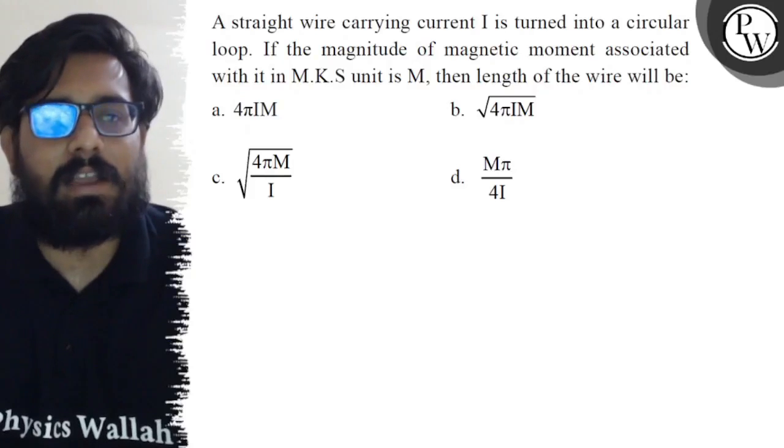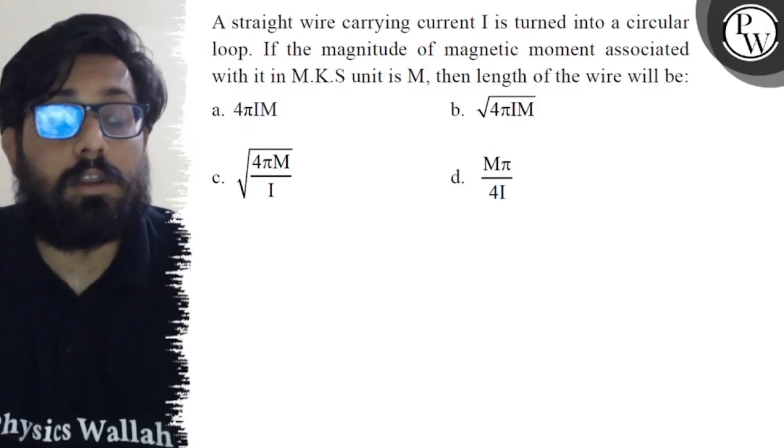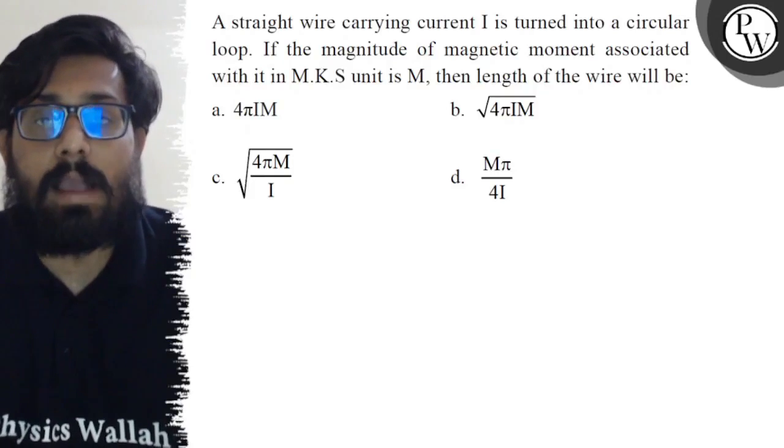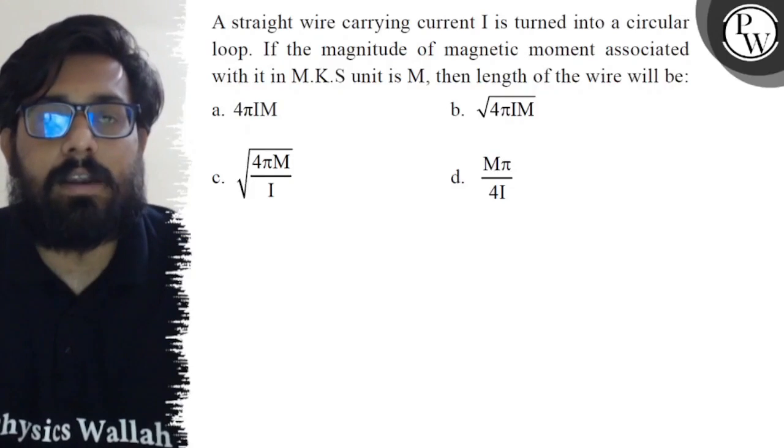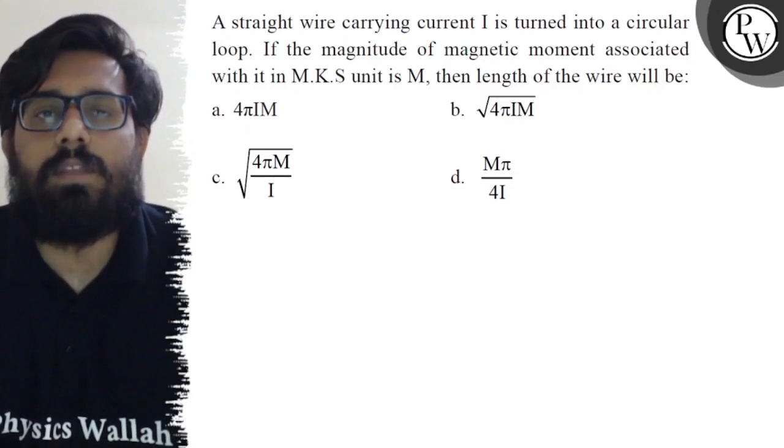Hello bachos, so let's see the question. A straight wire carrying a current I is turned into a circular loop. If the magnitude of magnetic moment associated with it in MKS unit is M, then the length of the wire will be: